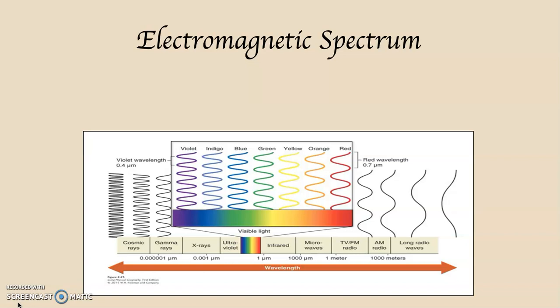And then as you go to the right, away from visible light, infrared light, microwaves, TV and FM radio wavelengths, AM radio wavelengths, and then long radio wavelengths, you can see that those are, in some cases, more than a thousand meters long each wavelength. So there's a significant difference between the wavelengths.